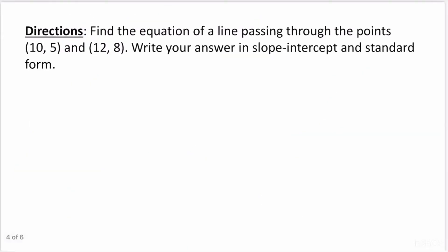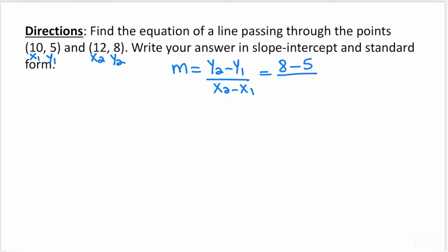Find the equation of a line passing through the points (10, 5) and (12, 8). Write your answer in slope-intercept and standard form. Neither point is the y-intercept since neither has an x-value of 0, so we have a bit more work. Starting with slope: m equals (8 minus 5) over (12 minus 10), which equals 3 halves.